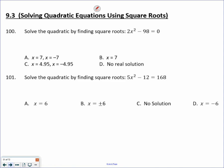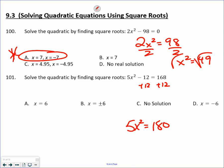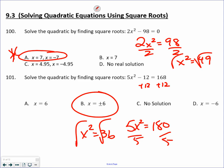We're going to isolate x squared and then take the square root. You always get a plus or minus answer — please make sure you understand that. The next one is done in the same way: we're going to add 12 first, divide by 5, and take the square root. B is the correct answer.